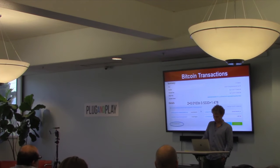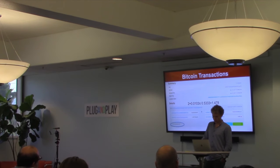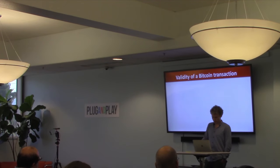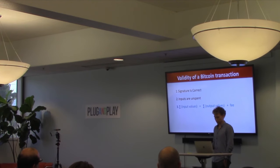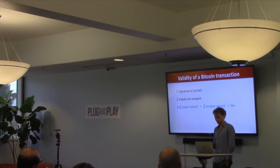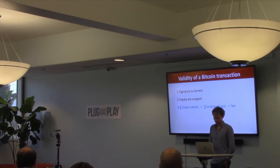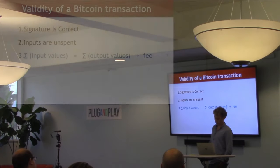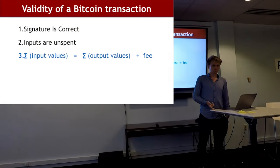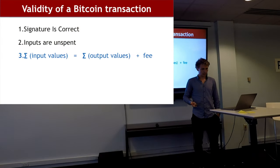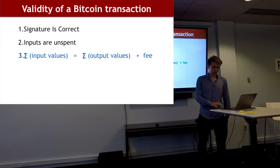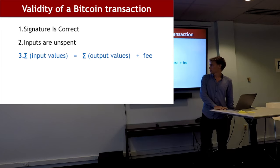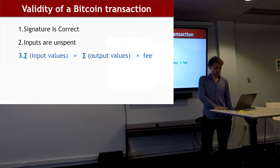Going back to the Bitcoin transaction: the validity of a Bitcoin transaction depends on three things — the signature being correct, the inputs being unspent, and this final equation: the sum of the inputs equals the sum of the outputs plus the fee.